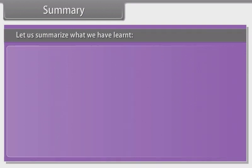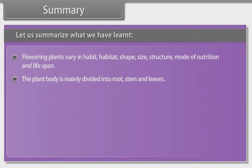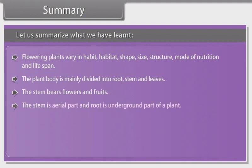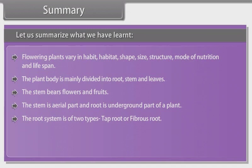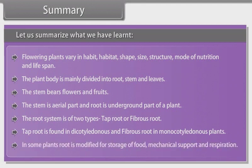Summary: flowering plants vary in habit, habitat, shape, size, structure, mode of nutrition and lifespan. The plant body is mainly divided into root, stem and leaves; the stem bears flowers and fruits. The stem is the aerial part and root is the underground part of a plant. The root system is of two types: tap root or fibrous root. Tap root is found in dicotyledonous and fibrous root in monocotyledonous plants. In some plants, root is modified for storage of food, mechanical support and respiration.